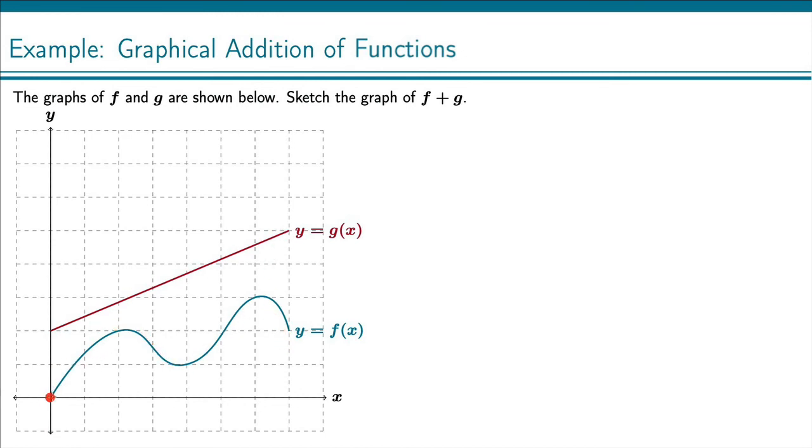First of all, this point right here at 0, 0 has a y value of 0. So I just take my g of x and I'm not adding anything to it, and so I'm going to have a point right there.